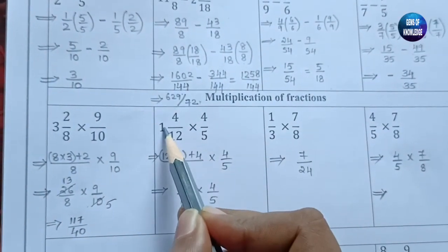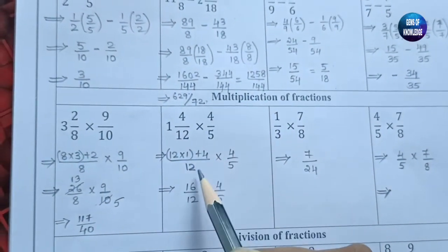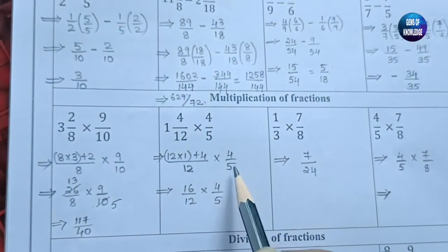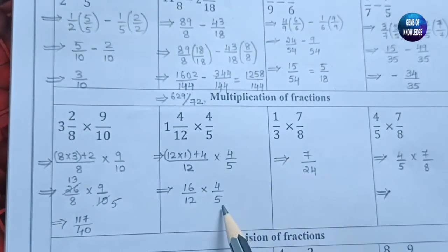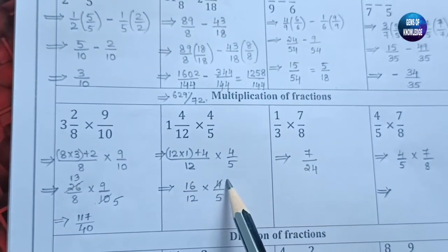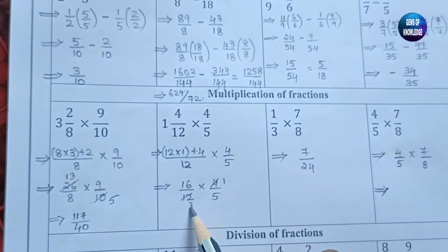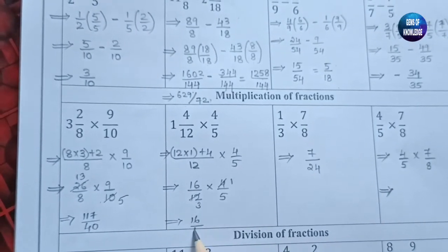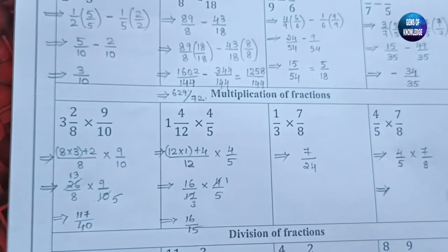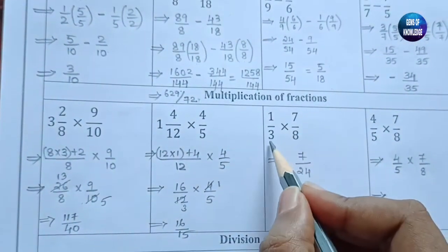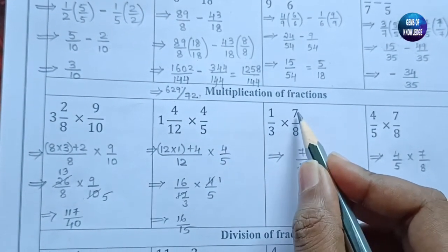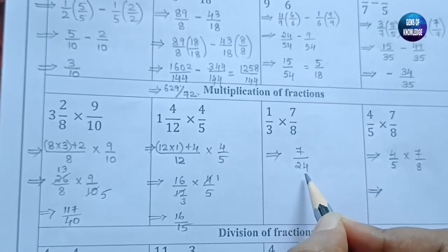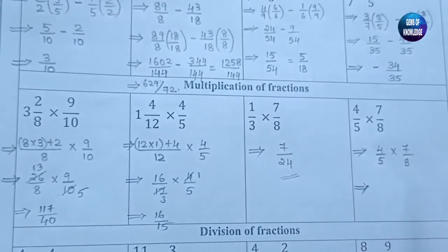The next multiplication: 12 ones are 12, plus 4 is 16, giving 16/12 multiplied by 4/5. Cancel: 4 ones are 4 and 4 threes are 12, leaving 16/15 — since 5 threes are 15. Then 1/3 multiplied by 7/8 can be directly multiplied: 7 ones are 7 and 3 eights are 24, giving 7/24.